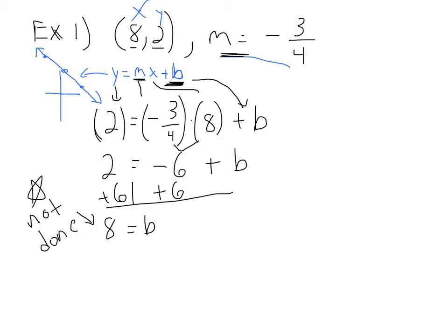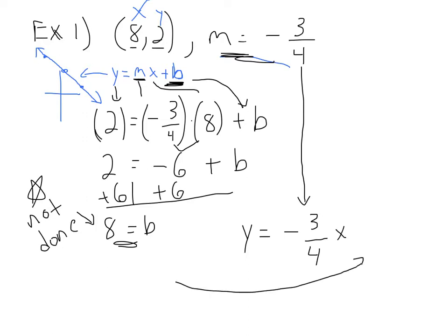What did we ask for at the beginning of this problem? The slope-intercept equation. So now all we have to do is plug these in. Y equals mx plus b — substitute in m and b. The m was negative three-fourths, so y equals negative three-fourths x. And then b is positive eight, so we write plus eight. That is the slope-intercept equation. If you have questions, pause and rewind.